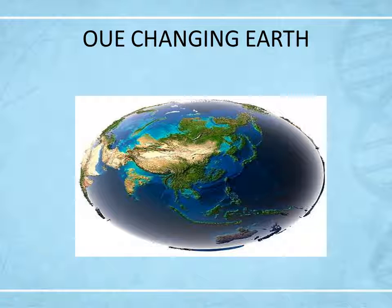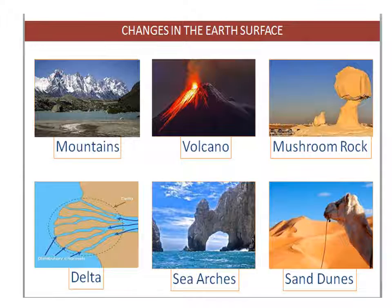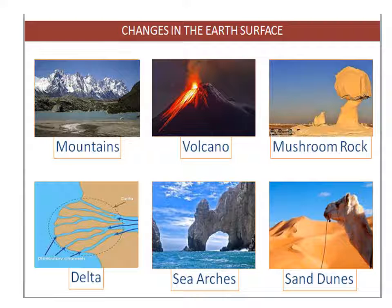Changes in the Earth's surface can be seen in different forms like mountains, volcanoes, mushroom rocks, delta, sea arc, sand dunes, etc.